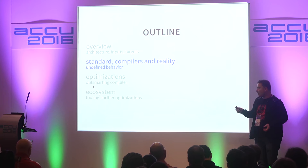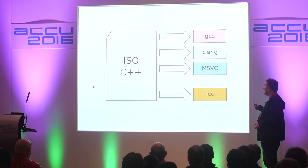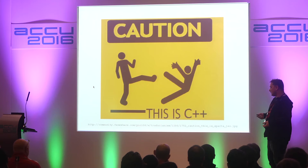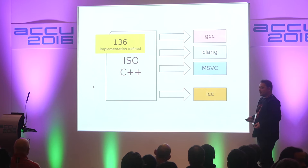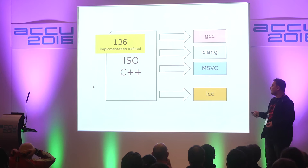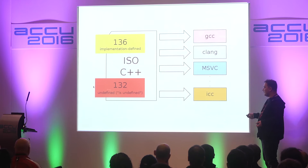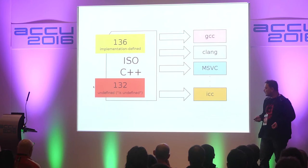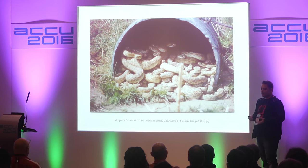Now let's move on to the standard. When we look from the top level, it's easy — we have one international standard, and this specification is implemented by different vendors, resulting in different compilers. But we must keep in mind that this is C++, and things are not easy by definition. If you look into the standard for implementation-defined stuff, you're going to find more than 100 items. And there is one more thing which is more evil — undefined behavior. I searched the standard for the phrase 'it's undefined' and found more than 100 occurrences. So even experienced programmers can introduce bugs without even noticing.